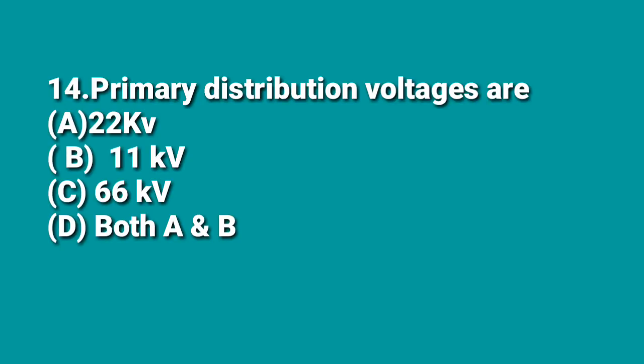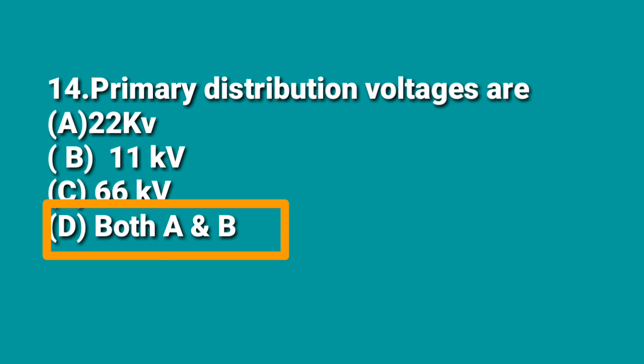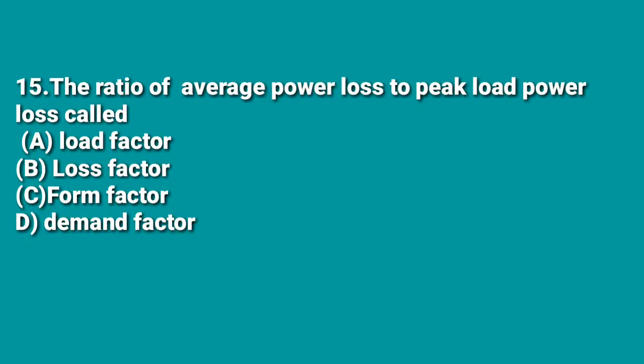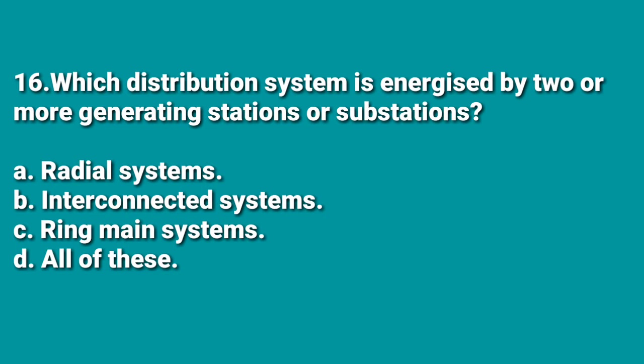The next question: what are the primary distribution voltage levels? A: 11 kV, B: 22 kV, C: 66 kV, D: both A and B. Both 11 kV and 22 kV are primary distribution voltages, so the answer is D. The following question: the ratio of average power loss to peak load power loss is called — A: load factor, B: loss factor, C: form factor, D: demand factor. The answer is B, loss factor.